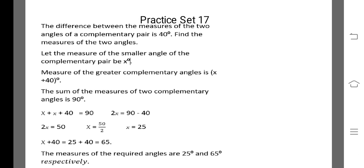The smaller angle is 25. For the greater angle, x plus 40, that is 25 plus 40, which is equal to 65. Therefore, the two angles of the complementary pair are 25 and 65.